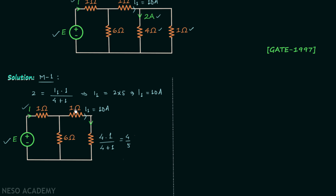The 1 ohm resistor and the 4/5 ohm resistor are in series, so we add their values to get a single resistor. The new resistance equals 1 plus 4 over 5, which gives 9 over 5 ohms.